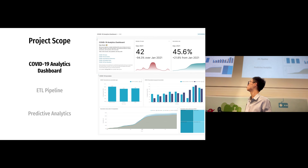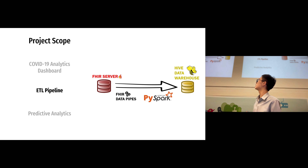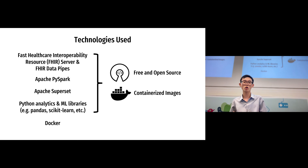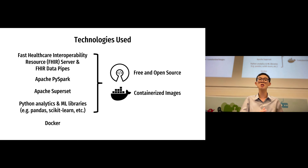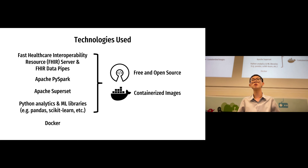My project scope involves three main components: the COVID-19 analytics dashboard, the ETL pipeline that takes data from the server to the data warehouse, and predictive analytics — more specifically, K-means clustering. Some of the technologies I use include the Fast Healthcare Interoperability Resource (FHIR) server and FHIR data pipes. The FHIR server is a type of server that manages different kinds of healthcare resources, such as patients, their conditions, encounters, and so forth. One key aspect of all these technologies is that they are free and open source.